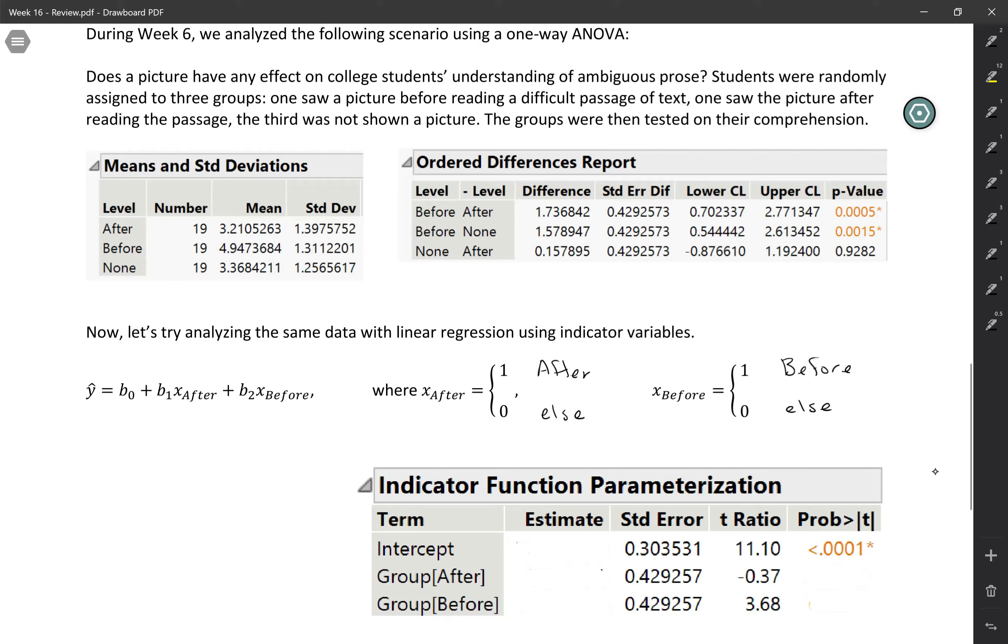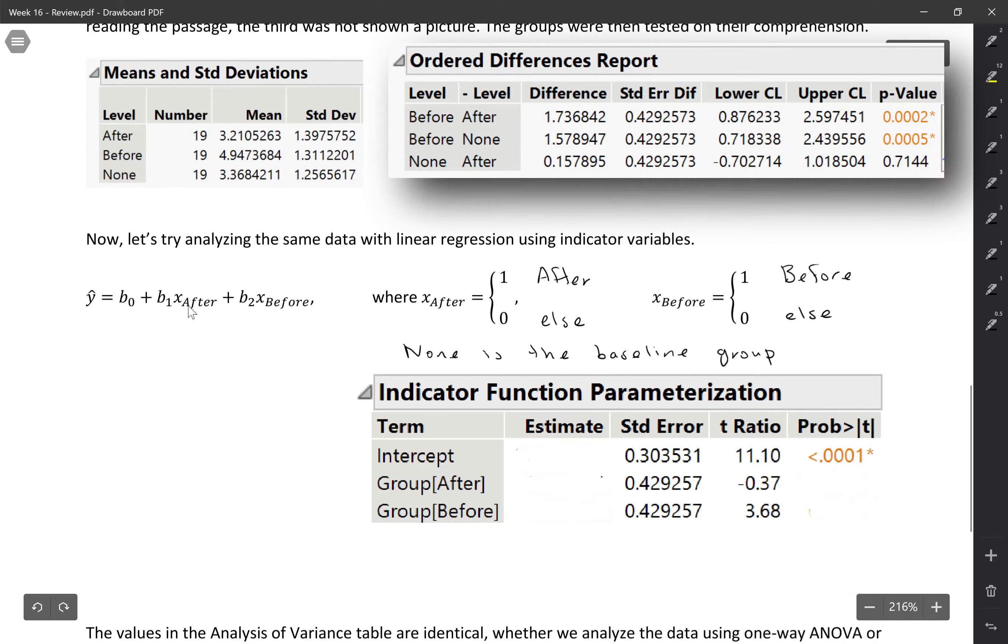And notice that we only need two indicators here, and that's because none, the third group, is the baseline group. So if both of your other indicators were equal to 0, then you know we were talking about none. And you can see I've got my regression equation set up here. I've got an intercept, a slope for after, and a slope for before. So I want to give you a chance to think about what these coefficients would be, what the intercept and slope coefficients would be. And I'll give you a hint that you should first think about how to interpret them. What are those numbers actually referring to?